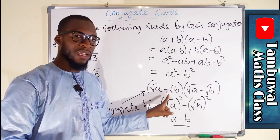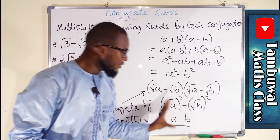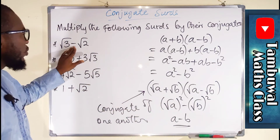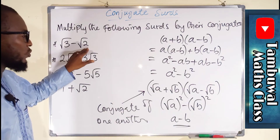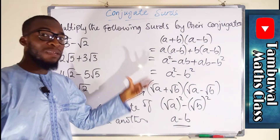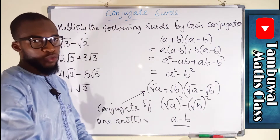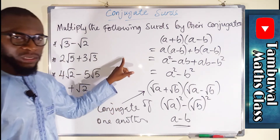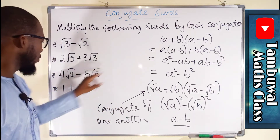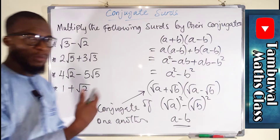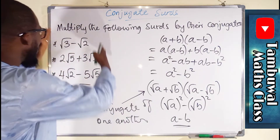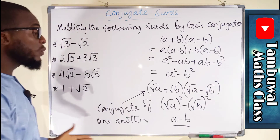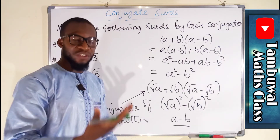They only have a difference of sign. The same thing is applicable here: if you are looking for the conjugate of √3 minus √2, it is going to be √3 plus √2 — just a difference of sign. Wherever you have a positive sign you take the negative, and wherever you have a negative you take the positive. Now let us see how we can multiply these sets of surds to verify we obtain a rational number.